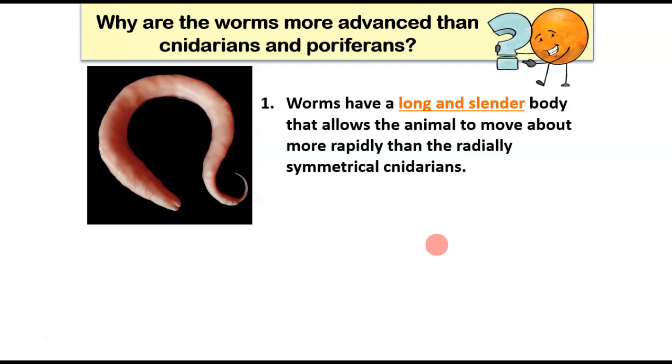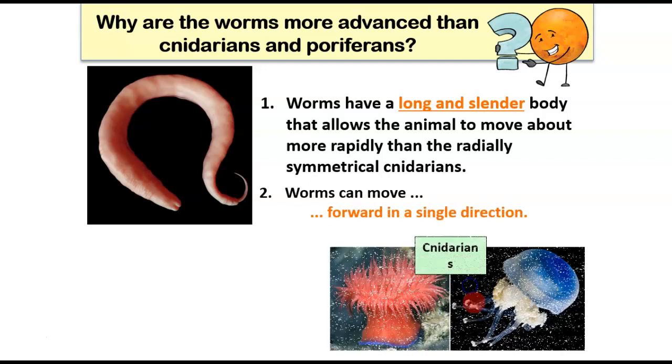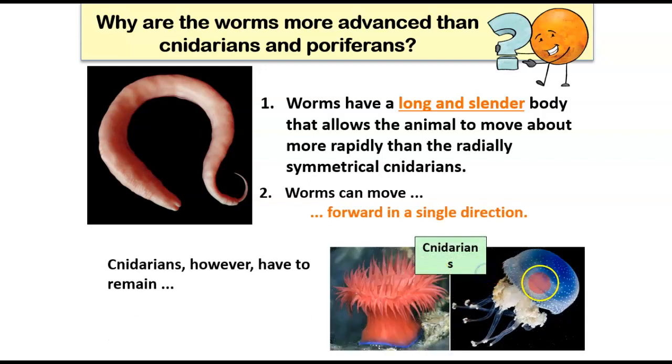These guys can actually consciously choose which direction they're going to go into. They can move forward in a single direction, whereas cnidarians have to remain stationary, like the sea anemones, or drift along in currents like the jellyfish.